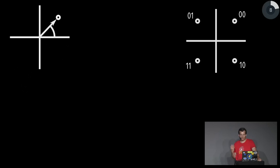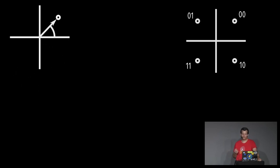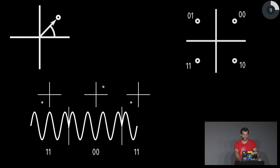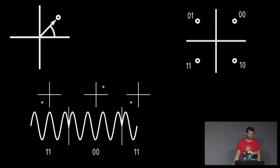We can just define our valid symbols inside this constellation diagram and assign bit values to them. For example, here you can see we have four valid points - four different symbols - and we can assign two bits to each of them. Now if you want to transmit a series of bits, we just use different valid points from our constellation diagram.